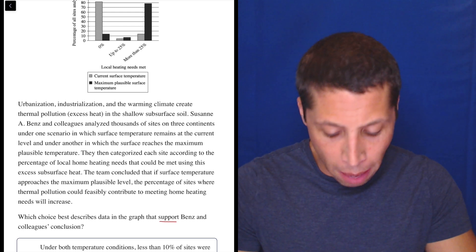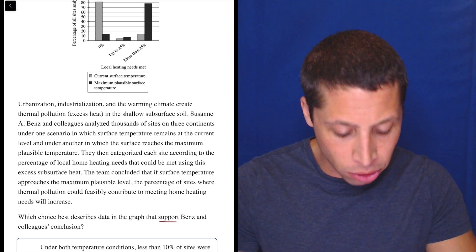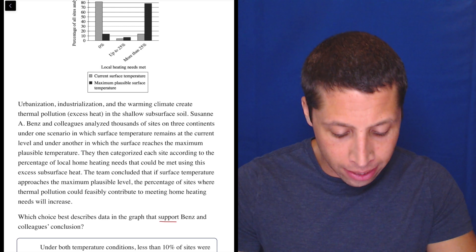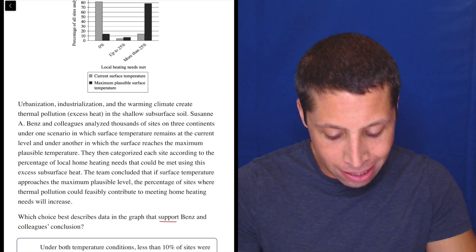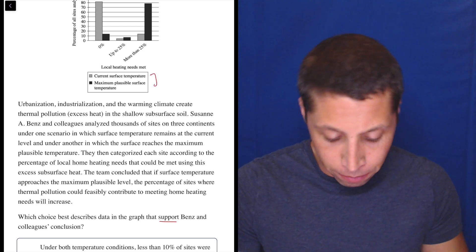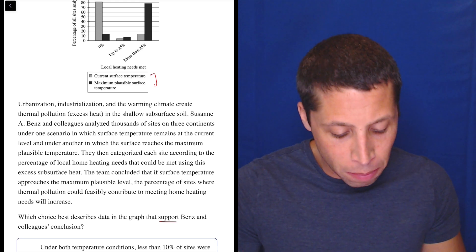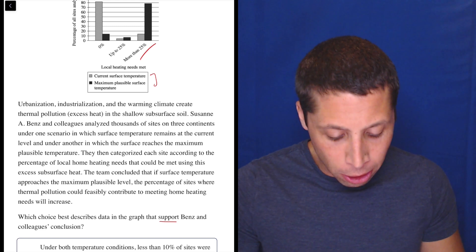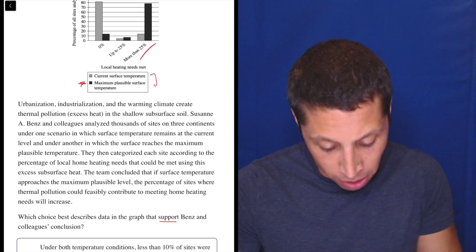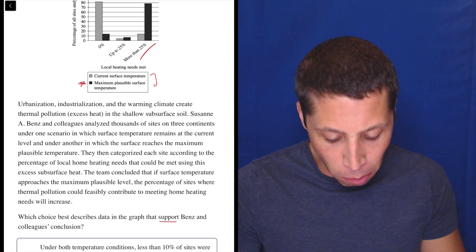Urbanization, industrialization, and the warming climate create thermal pollution in the shallow subsurface soil. Suzanne Abenz and colleagues analyzed thousands of sites on three continents under one scenario in which surface temperature remains at the current level and another in which the surface reaches the maximum plausible temperature. That's what they say right here. They then categorized each site according to the percentage of local home heating needs that could be met using this excess subsurface heat.